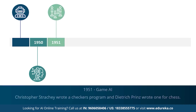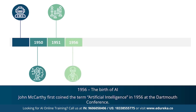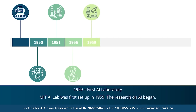1951 marked the era for game AI, where computer scientists developed programs for checkers and chess, though these were later rewritten in a better way. 1956 marked the most important year for artificial intelligence — John McCarthy first coined the term 'artificial intelligence.' This was followed by the first AI laboratory, the MIT AI lab, set up in 1959, dedicated to the research of AI.